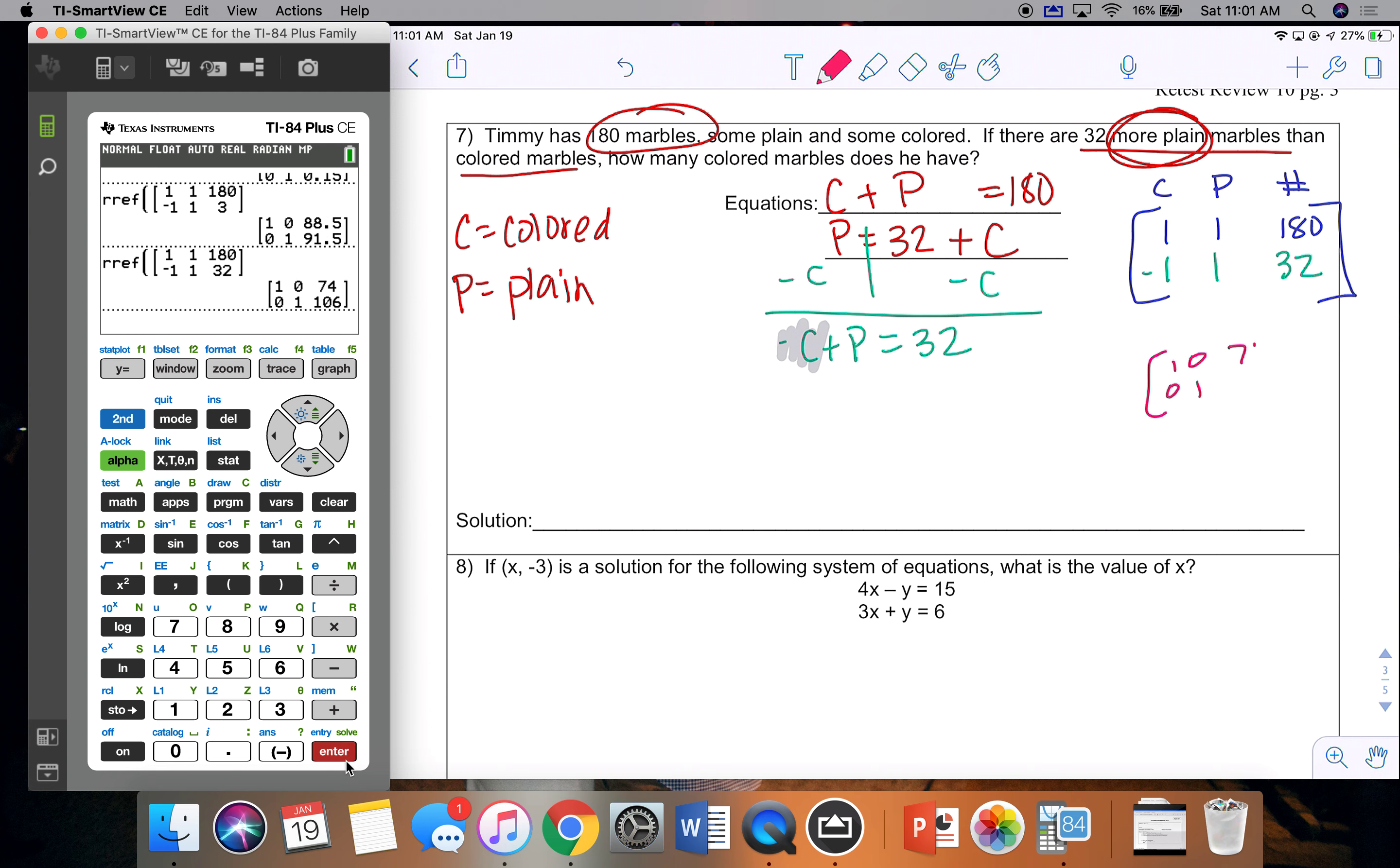So I get 1, 0, 0, 1, 74, 1, 0, 6. So remember, I put in C, then P, so my answer comes out C, then P. They wanted how many colored. So colored is 74 marbles.